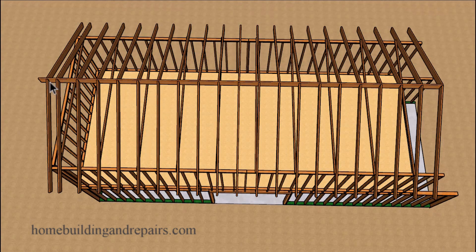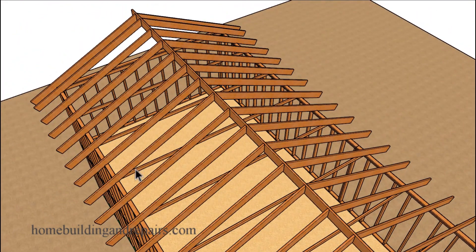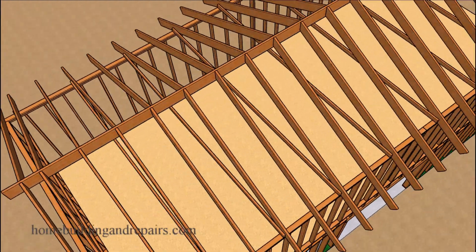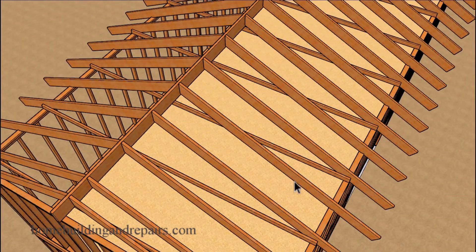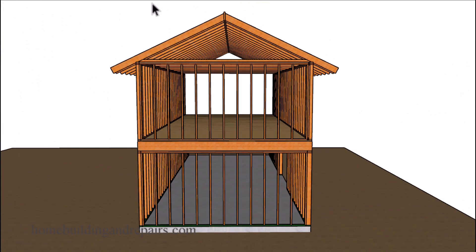A vaulted ceiling will usually require the installation of a beam. That beam is usually installed either underneath the ridge, or you will remove the existing ridge and replace it with a beam. The reason for the beam is to prevent the walls from spreading out. In this example, the rafter ties or ceiling joists prevent the walls from spreading, but once you remove them you will need to reinforce it — usually with a structural ridge beam.